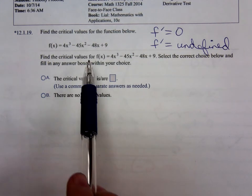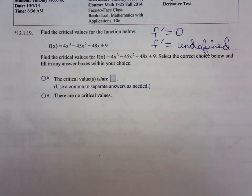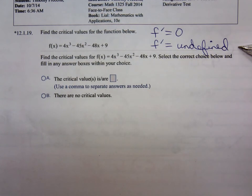When I look at this function, I notice it's a polynomial function. Polynomial functions are always defined. Every number is in the domain of a polynomial function. Likewise, its derivative is a polynomial. So the derivative for the polynomial is also defined. If it's a polynomial function, you don't have to worry about this second condition. That never occurs.